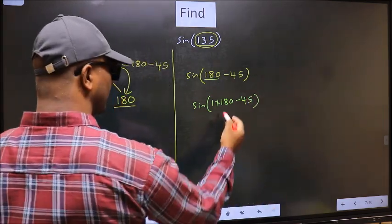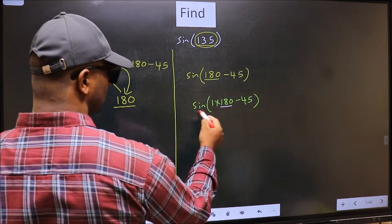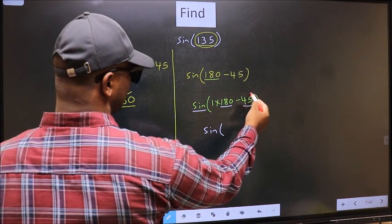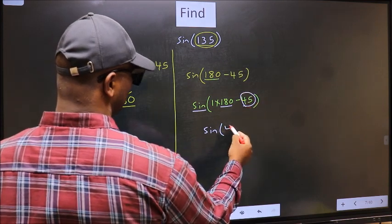Next. Here we have 180. So sine is not going to change. It will remain sine. And inside, we get this angle 45.